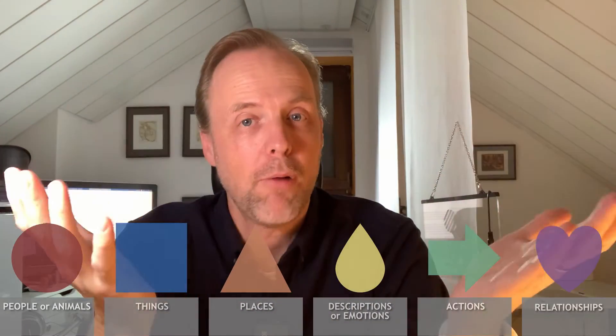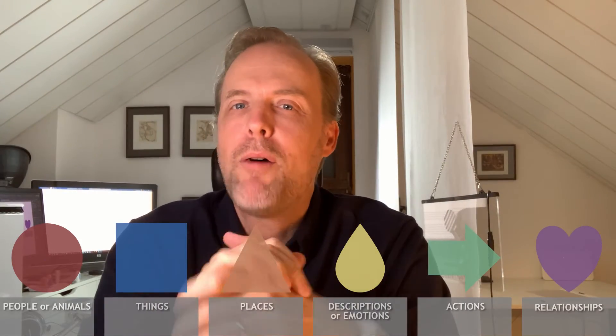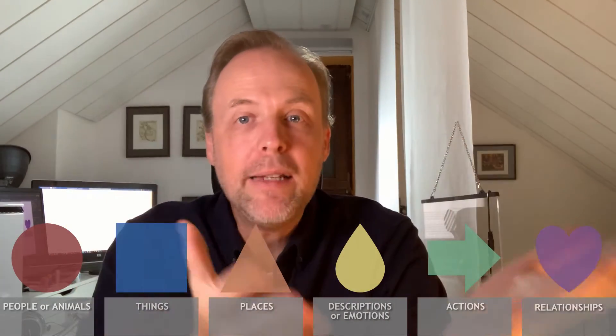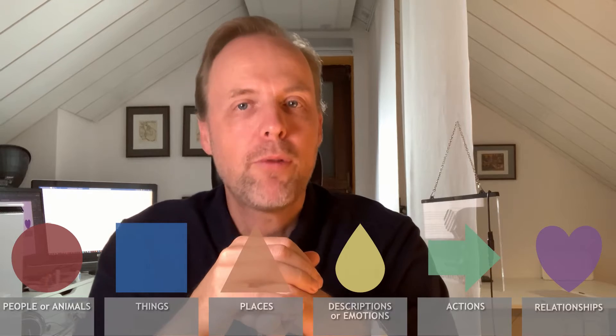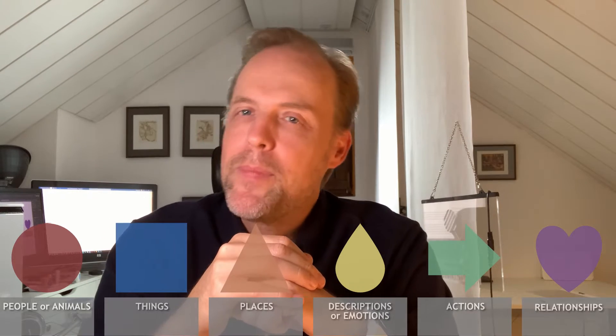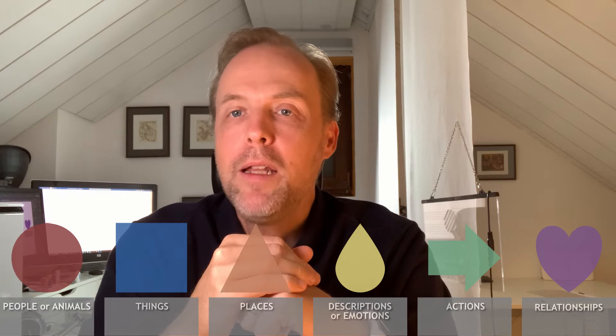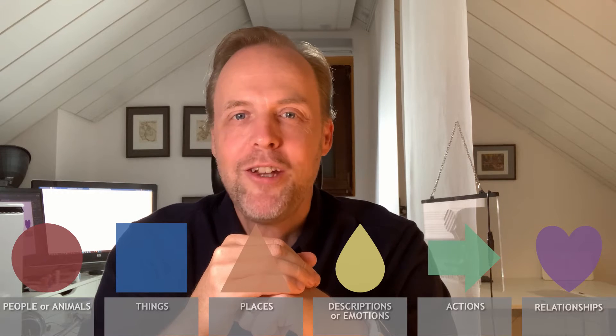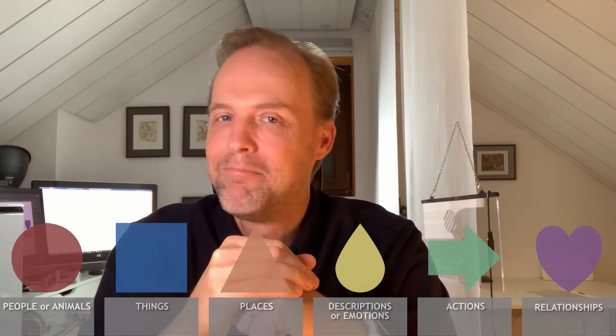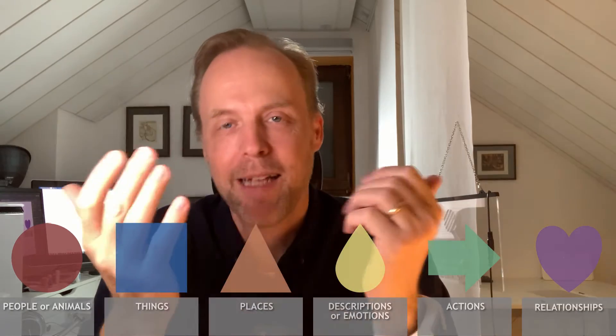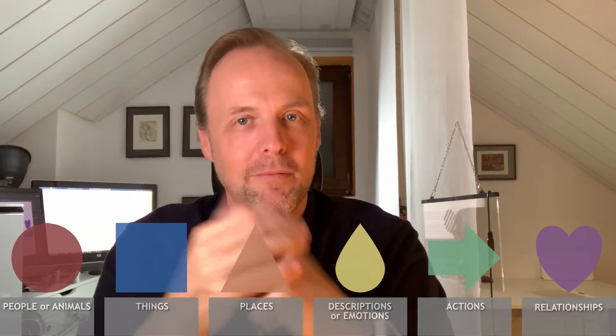Red represents the people and animals in your story. Blue represents things that play a role in the story. Our story also needs to take place somewhere, and that is the color orange. Yellow is about descriptions and emotions, and green represents actions. A story without relationships would be so boring — and that's the color violet: relationships.